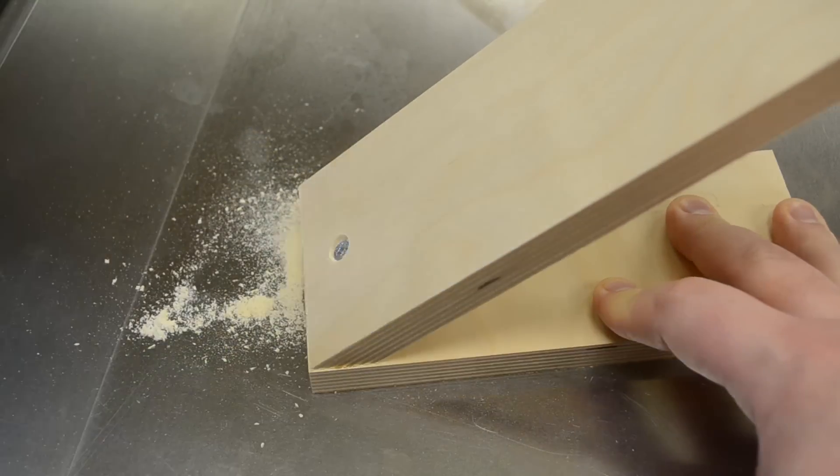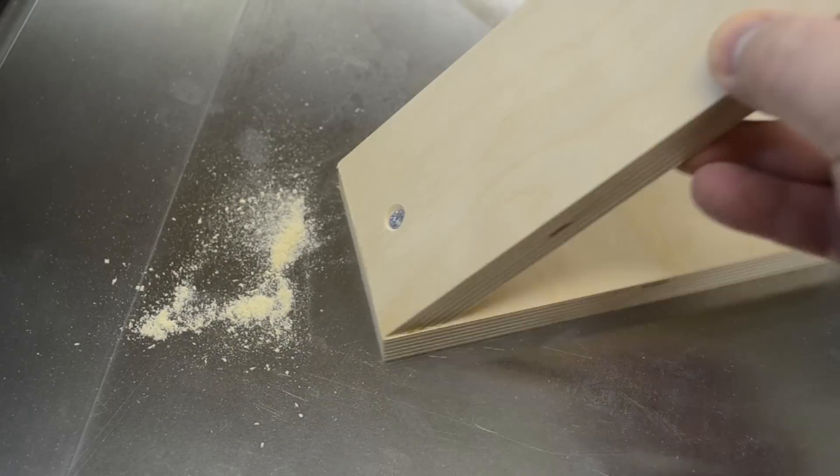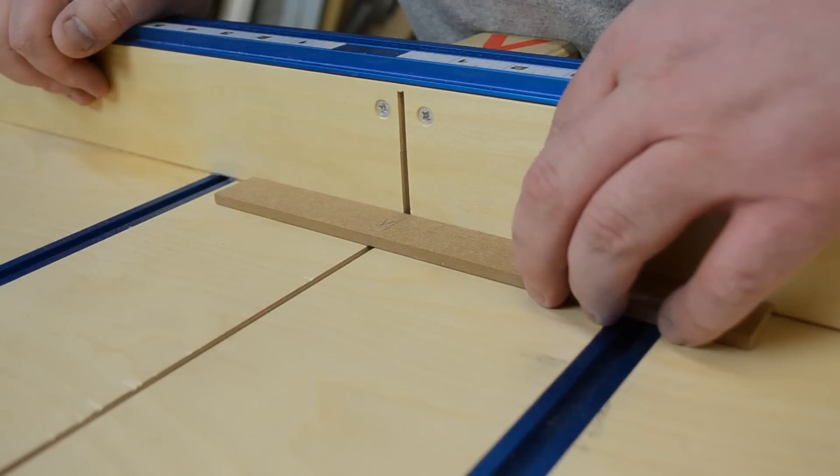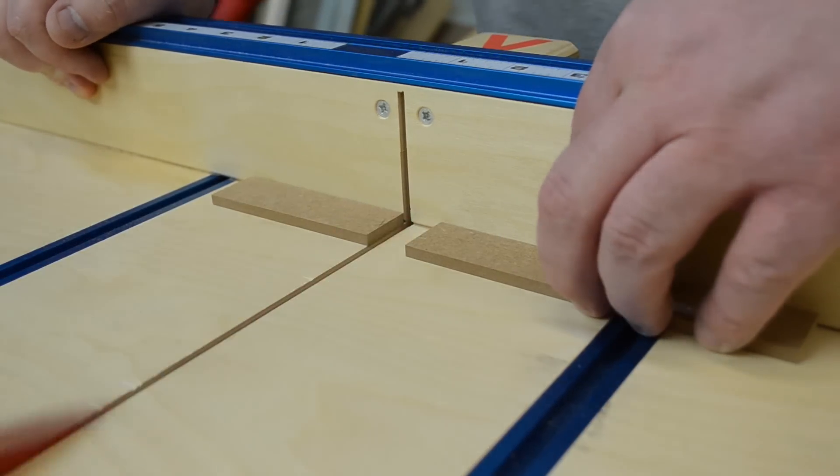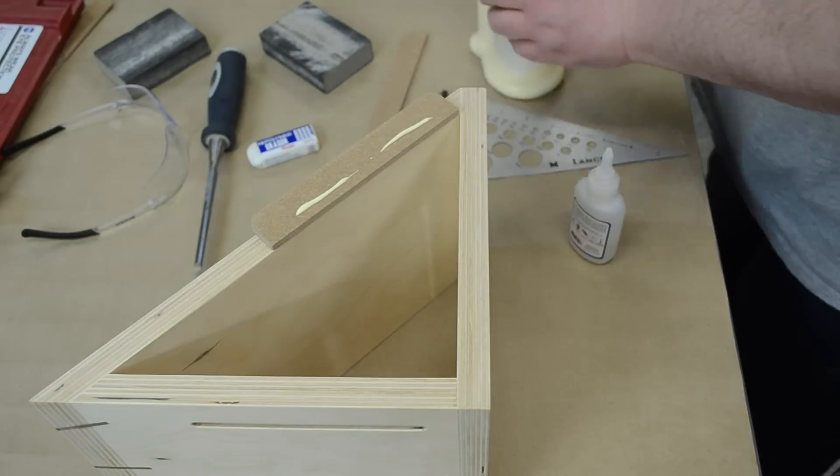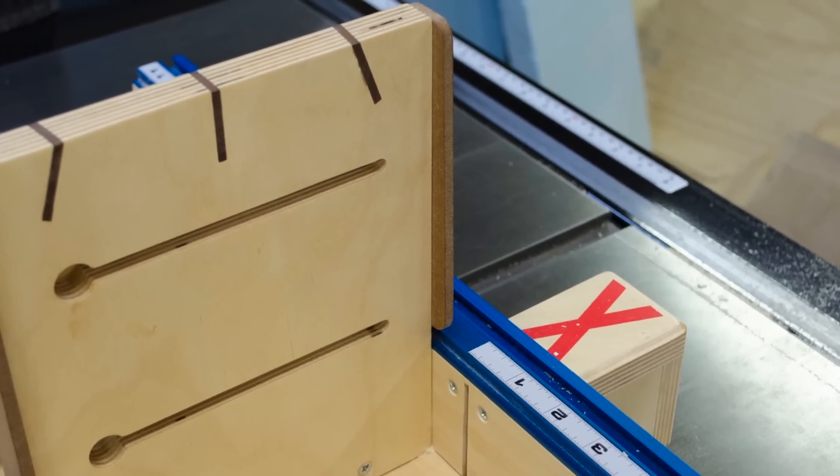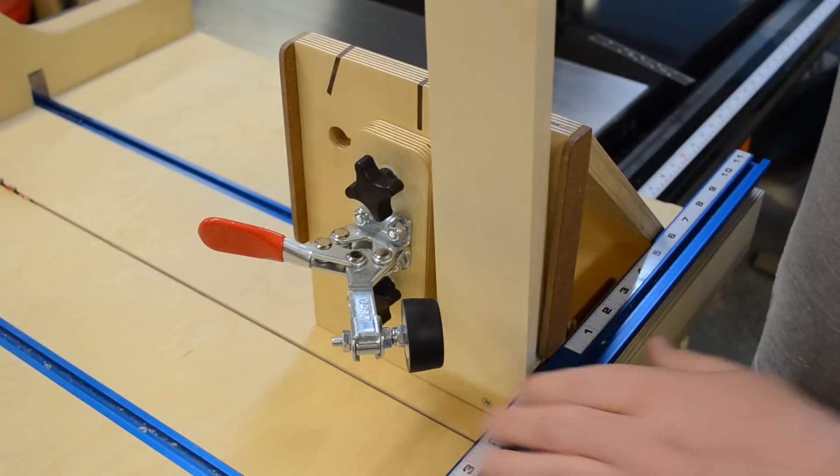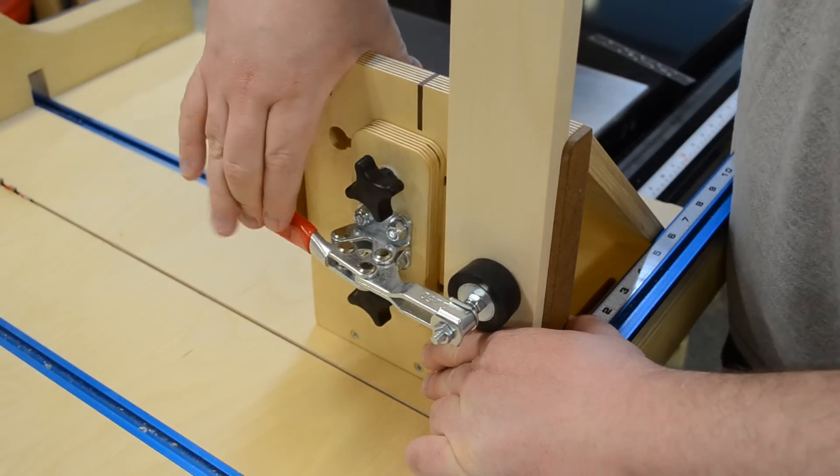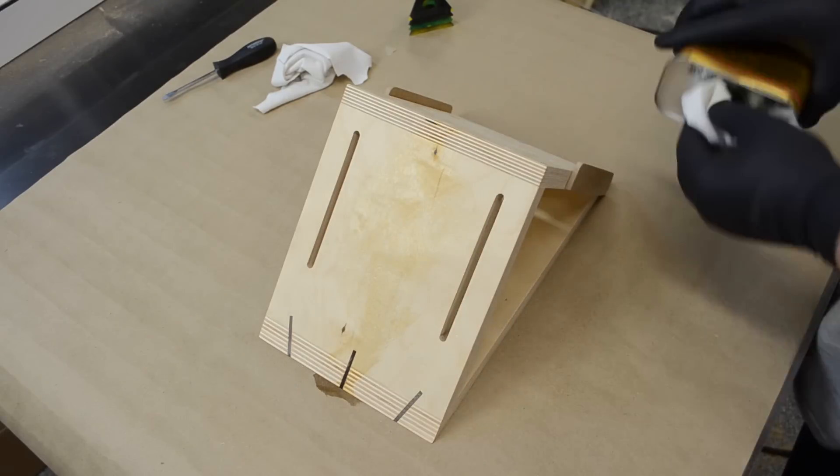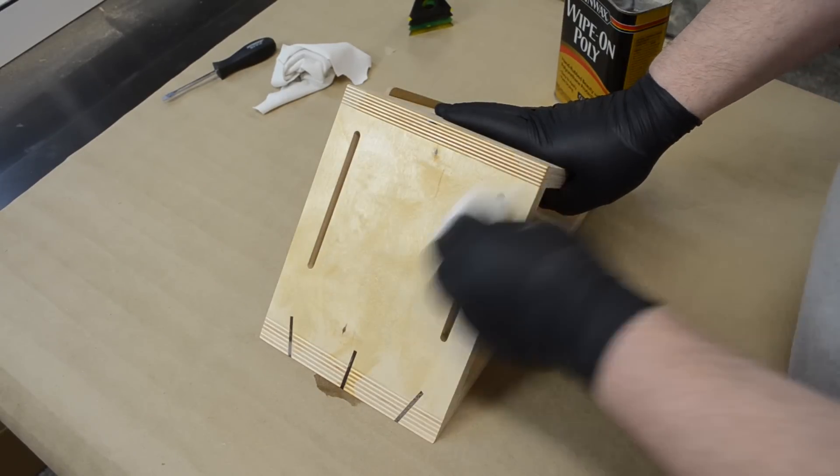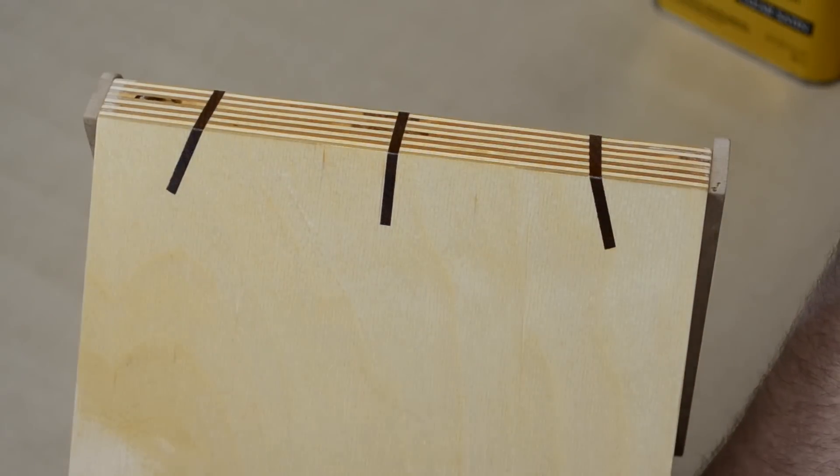The jig was going to sit on my cross cut sled, but for the tenoning portion I wanted a larger fence to reference against. So I took some quarter inch MDF, cut it into small strips and glued those into place. You can see here it basically extends the fence to support the workpiece when you're cutting tenons. One coat of wipe-on polyurethane just to kind of keep some of the grease and grime off of it, and I was ready to test it out.